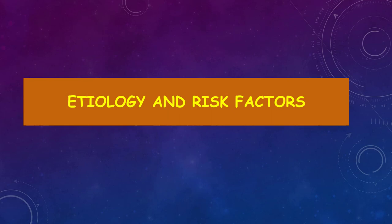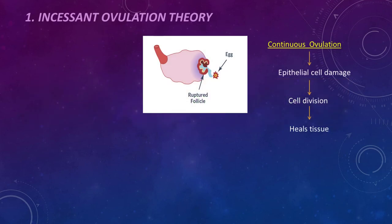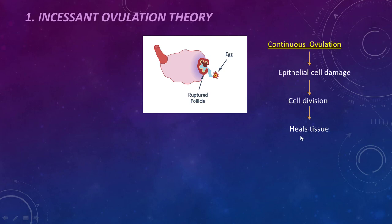Regarding etiology and risk factors, the first is the incessant ovulation theory. This means continuous ovulation throughout a woman's life causes repeated epithelial cell damage to the ovary. When there is continuous damage to the epithelium, cell division occurs for tissue healing, and this cell division is a predisposing factor to tumor formation. More cell division and more tissue injury lead to abnormal cell division and abnormal tissue development.